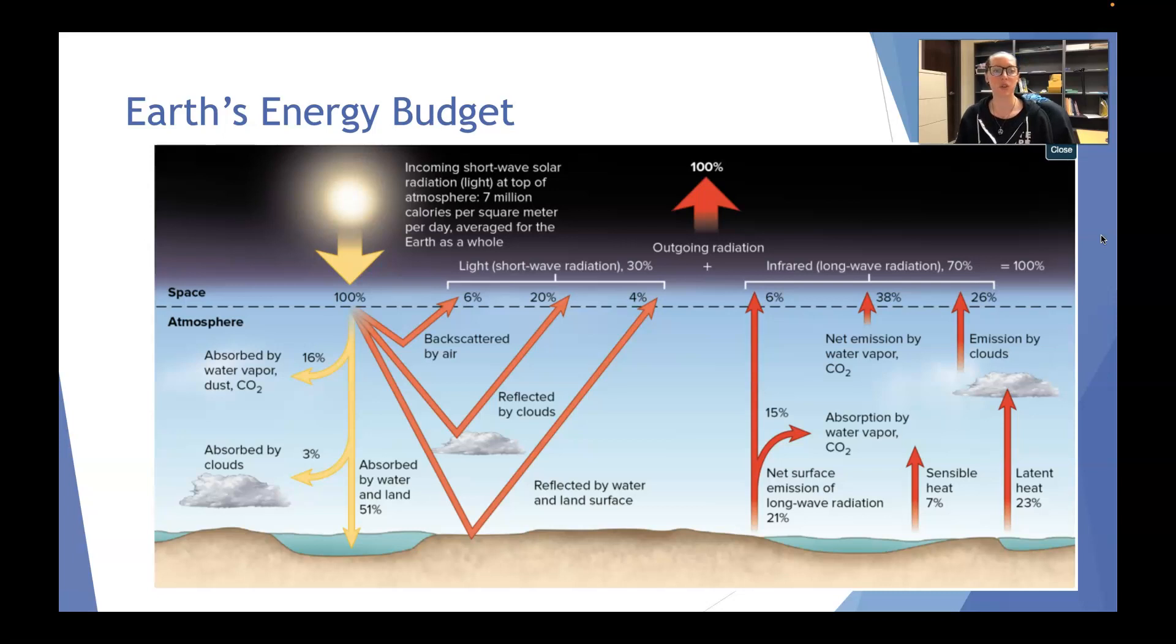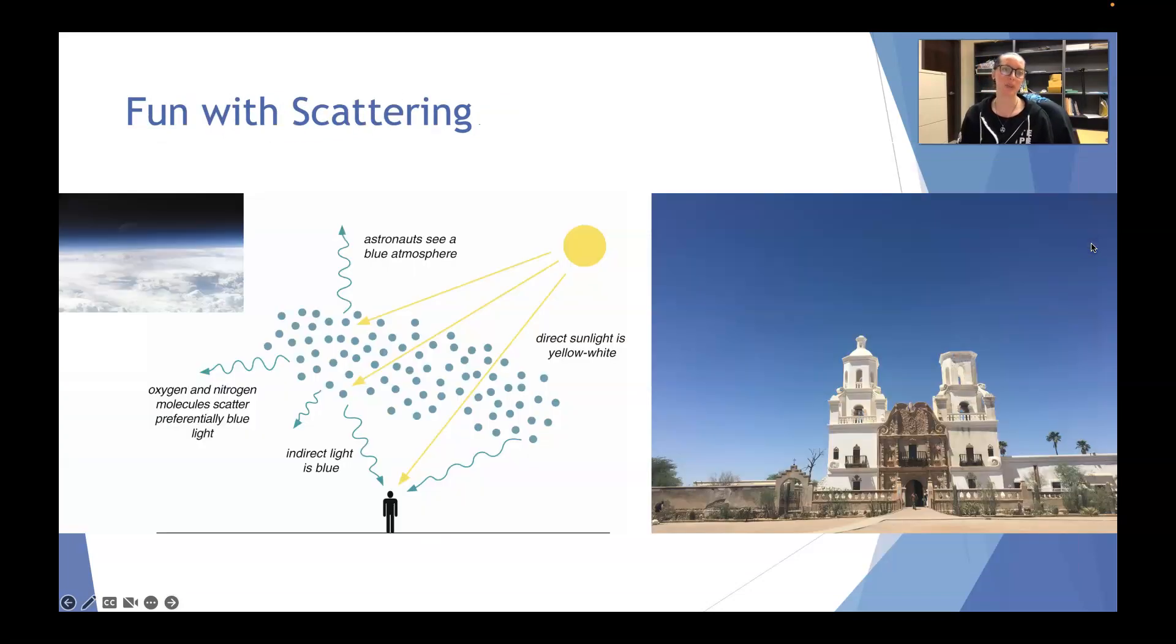So something I just wanted to kind of touch on in terms of this idea of scattering, not so much, we have like the backscattered by air here. But what's kind of cool is with scattering, there's a reason why we see the sky is blue. So the light that's coming in, for all intents and purposes, all of this light is white from the sun and it's scattered by the molecules in our atmosphere. It scatters that preferentially blue light. So then what we see of this indirect light is blue and it's a very, very pretty blue as long as there's nothing else in the atmosphere.